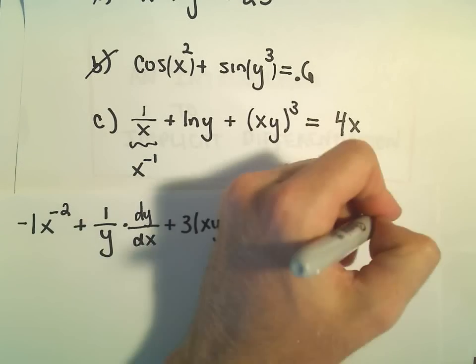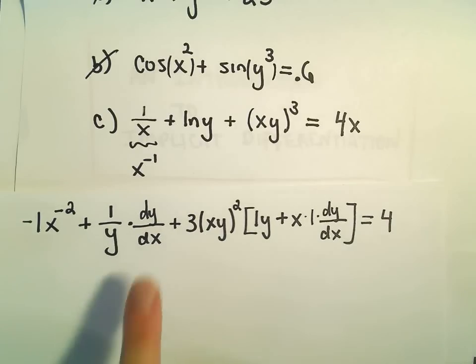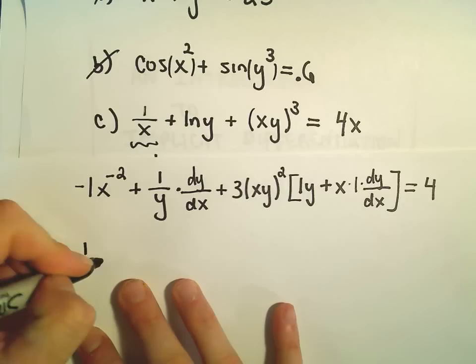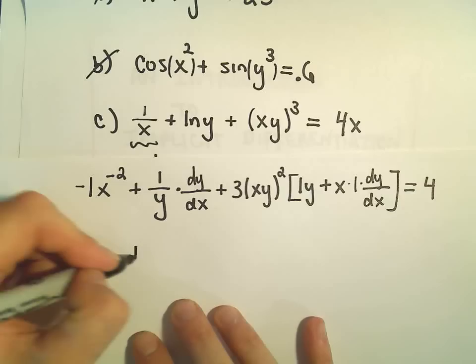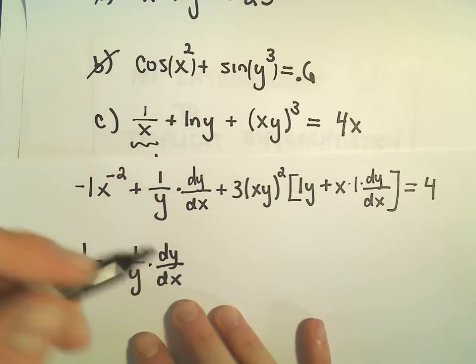The derivative of 4x on the right will just leave us with 4, and now our goal is to solve for dy dx. What I'm going to do is just get rid of all the brackets. So first I'll just rewrite this as negative 1 over x squared, plus 1 over y times dy dx.